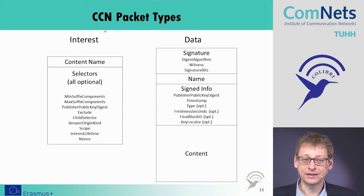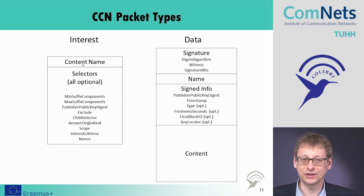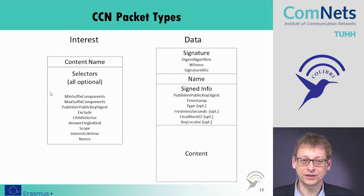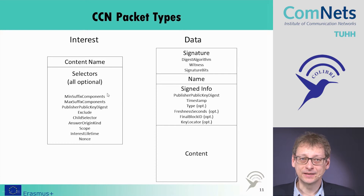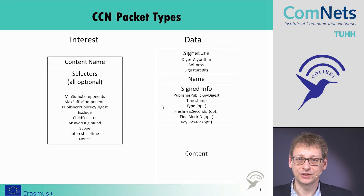Looking at CCN packet types, we have two main kinds. First, we ask for information by expressing interest. In this interest packet, we have the content name and some selectors which define what kind of information is being asked for. This interest is propagated through the network until it finds the data. The data packet itself contains the content, a signature, the content name again, and signed information providing authentication of the data.